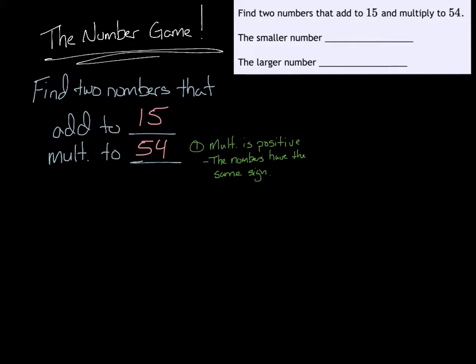First thing, the multiplication is positive, meaning the numbers must have the same sign. The two numbers we're looking for then are either both positive or both negative. That's the only way to multiply two numbers to get a positive number. They have to have the same sign, so that's important.